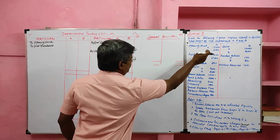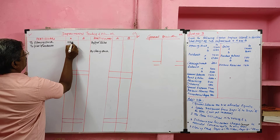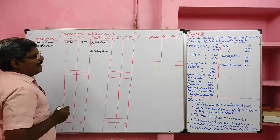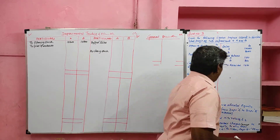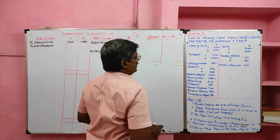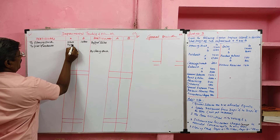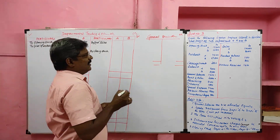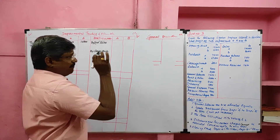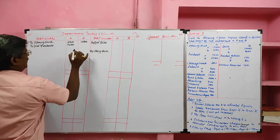Now I am going to start. First, opening stock: for department A, 15,200; for department B, 10,800. Then purchase is given, and at the same time returns are also given. So purchase minus purchase return — that is net purchase — should be recorded in the trading account. Purchase return should be deducted from total purchase so we will get a net purchase.